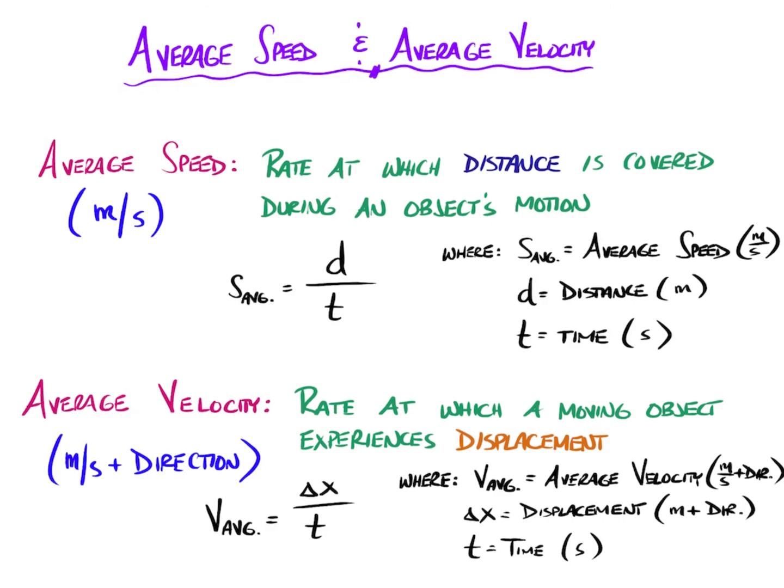Time, again, is measured in seconds. Therefore, the average velocity unit must be meters per second plus a direction. Very similar terms, calculated slightly differently based on slightly different concepts.